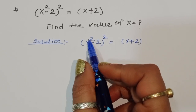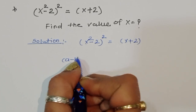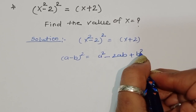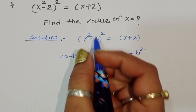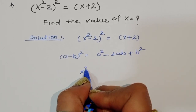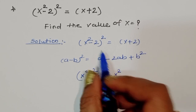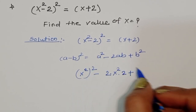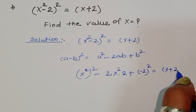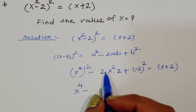We can see here, if we consider x² as 'a' and 2 as 'b', this is an (a - b)² form. The formula for (a - b)² is a² - 2ab + b². Applying this formula, a² is (x²)² = x⁴, minus 2 times x² times 2, plus 2² — all equal to x + 2.